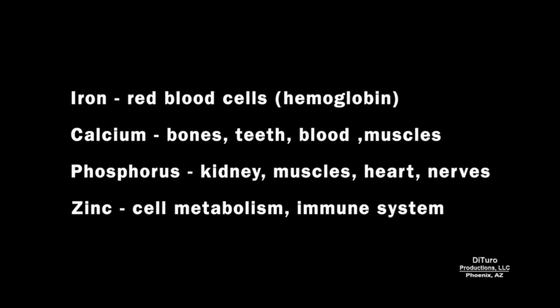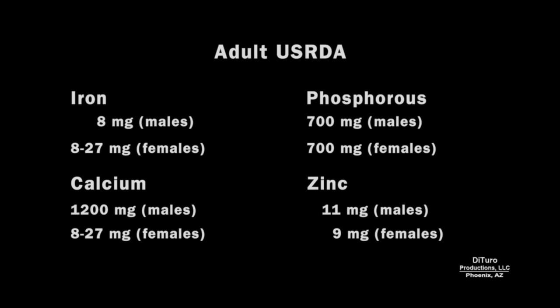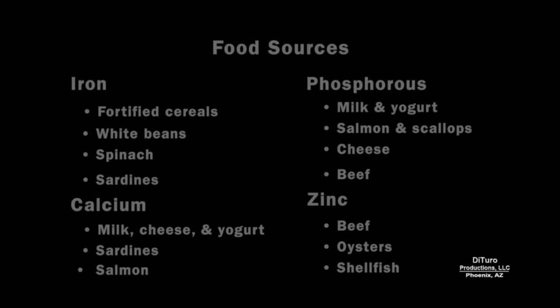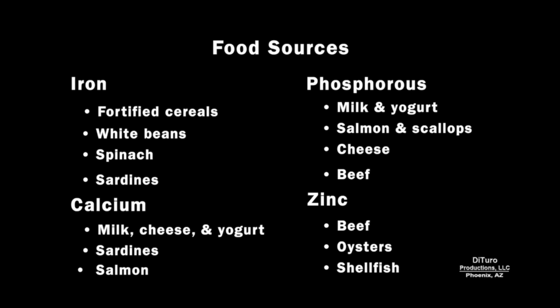Deficiencies can cause serious illness. The recommended dietary allowance is as low as 8 mg for iron and as high as 1,200 mg for calcium — not surprising since calcium is required for healthy bones and teeth. Here are a few food sources for iron, phosphorus, calcium, and zinc.